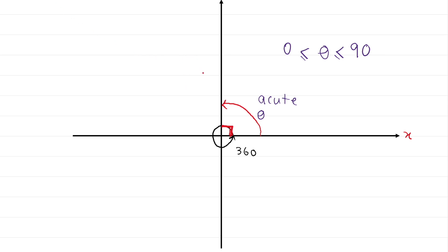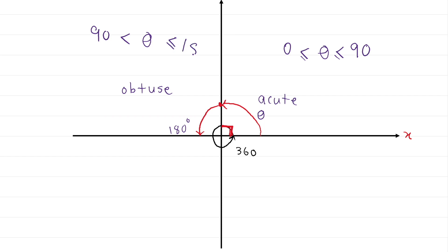When we continue our journey from the first quadrant toward the second quadrant and stop at the line there, finishing the second quadrant - if the angle is from the beginning up to the end there, that is what we call obtuse. Obtuse angle is where? From zero all the way to 180. So the value of obtuse angle is actually from 90 up to 180 degrees.